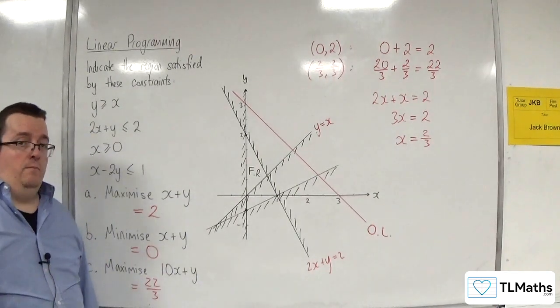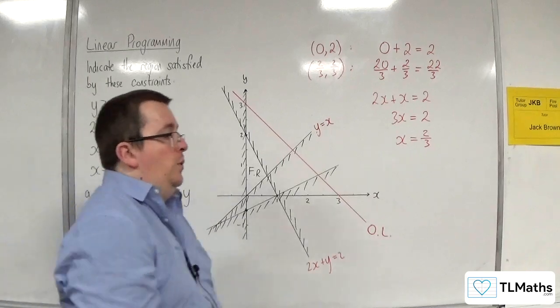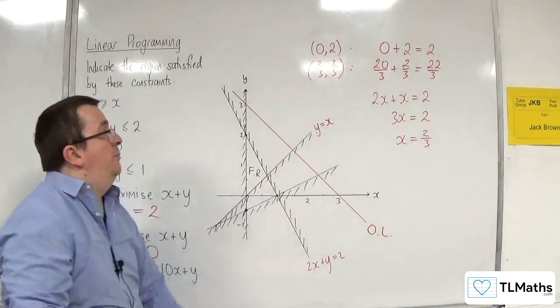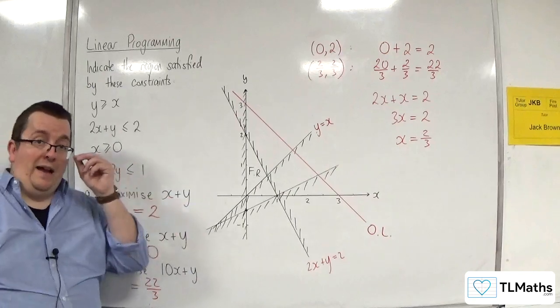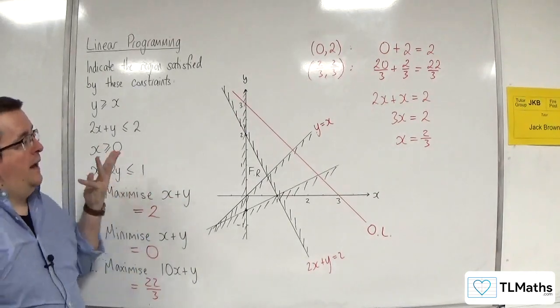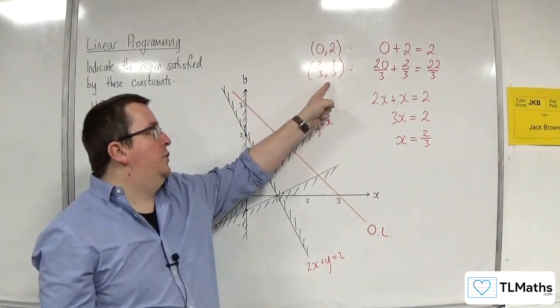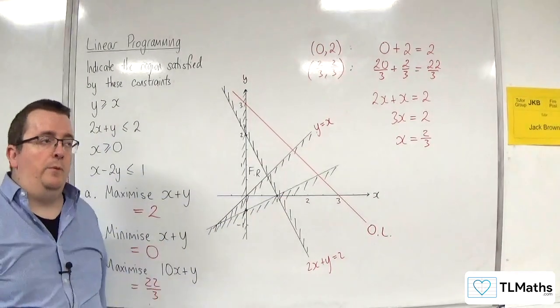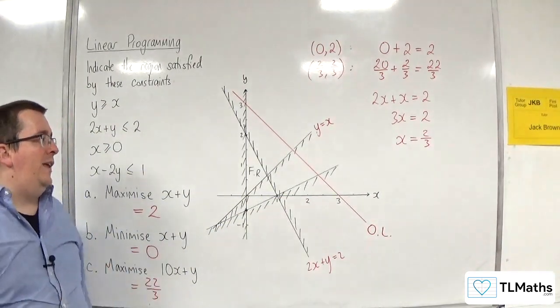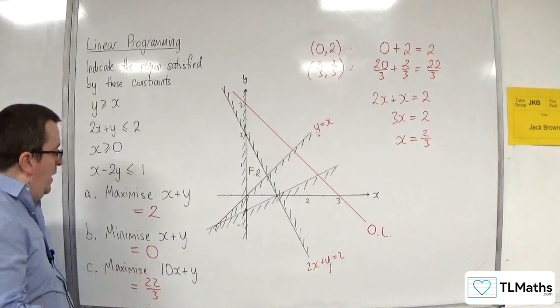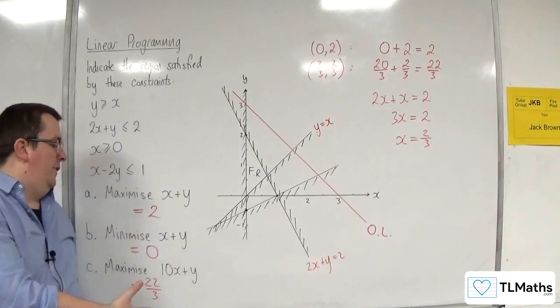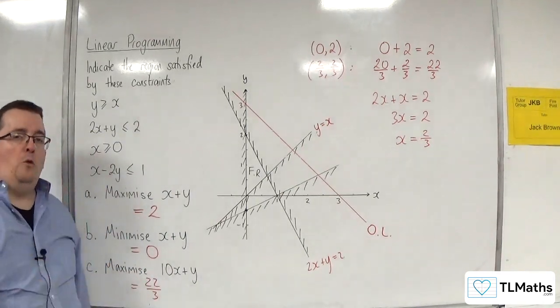But, as I said, depending on the context of the situation, it may be completely implausible to suggest that as an answer. Because we can't have 2 thirds of a chair and 2 thirds of a table, for example. So, the context here is key, but that's how we identify an objective function and be able to maximize or minimize it.